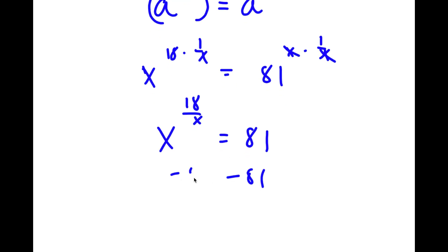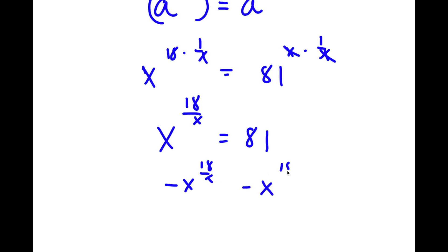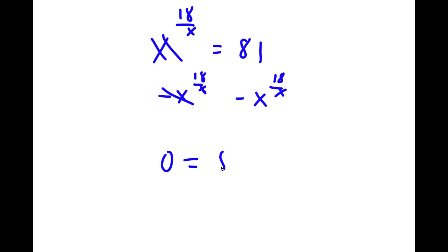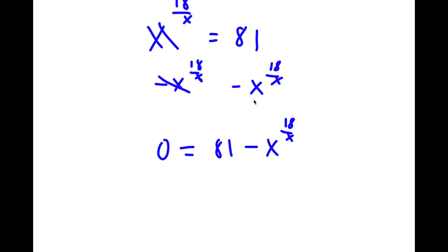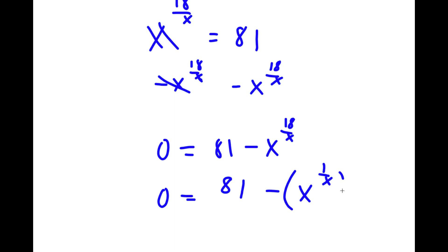Now if I subtract x to the power of 18 over x on both sides, these two cancel out and I have 0 is equal to 81 minus x to the power of 18 over x. And now I'm going to rewrite this as 0 is equal to 81 minus x to the power of 1 over x, to the power of 18.